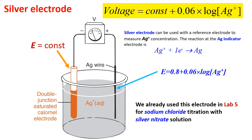The usual silver electrode can be made simply of a silver wire. In this case, voltage is some constant depending on a number of parameters, and it is a function of log of silver ion concentration multiplied by 0.06. Silver electrode can be used as a reference electrode to measure silver concentration or as an indicator. The reaction at silver indicator electrode is Ag+ plus one electron to metal Ag.